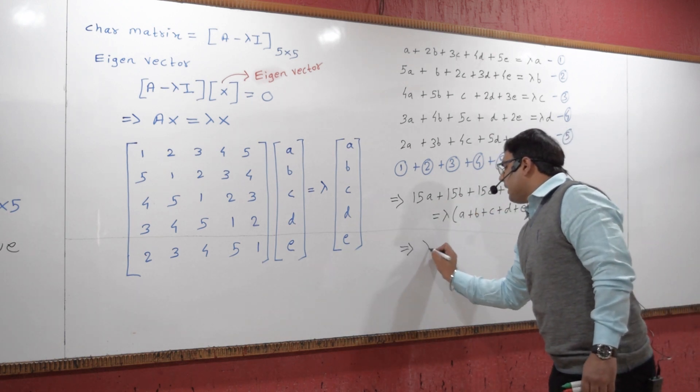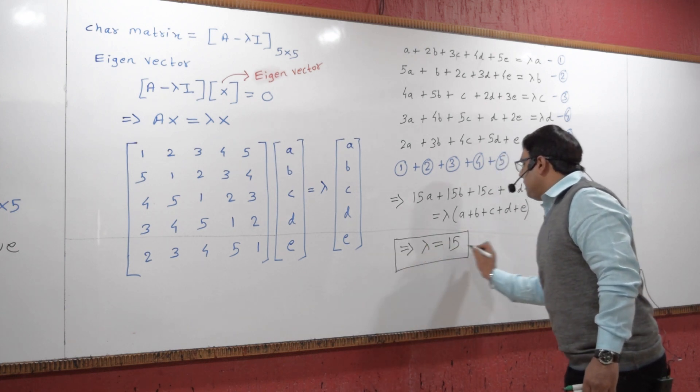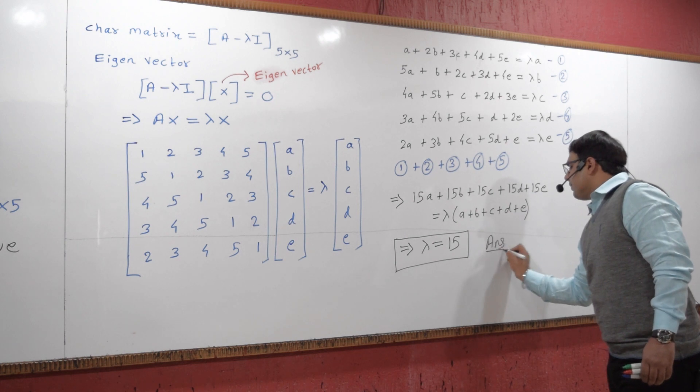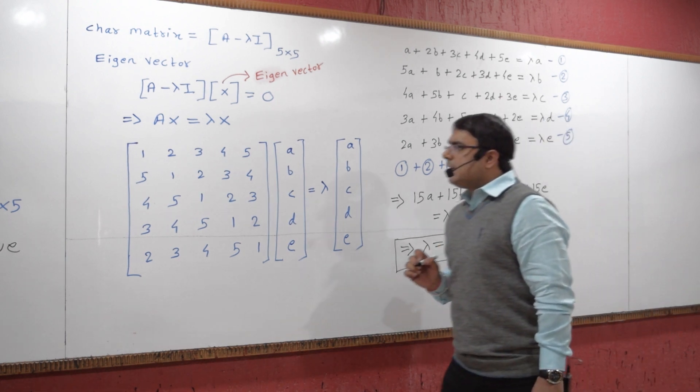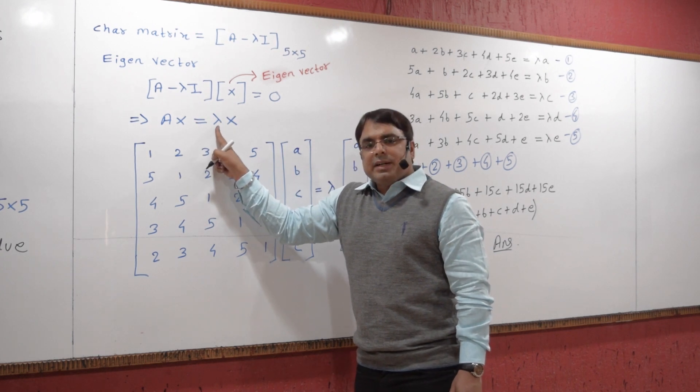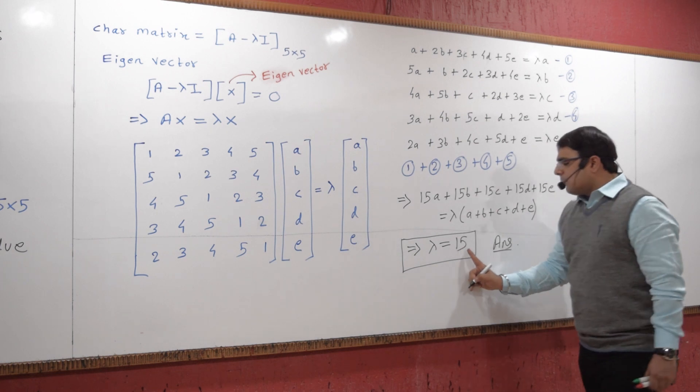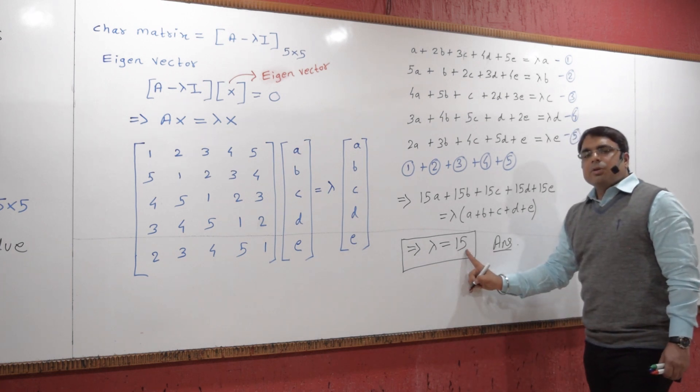This is a very simple equation. On solving this equation, you will get lambda equals 15. This will be your answer. The value of lambda that satisfies this equation is the eigenvalue, so the answer to this question is eigenvalue is 15. Thank you, friends.